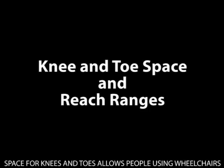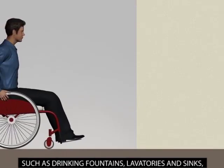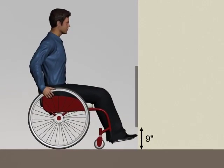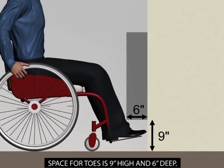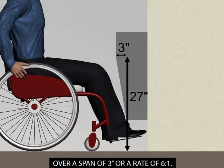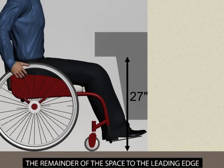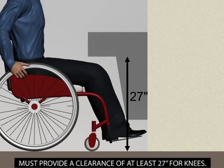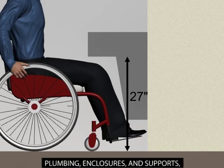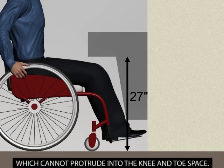Space for knees and toes allows people using wheelchairs to pull up sufficiently to elements such as drinking fountains, lavatories and sinks, and dining and work surfaces. Space for toes is 9 inches high and 6 inches deep. The clearance must increase to 27 inches over a span of 3 inches or a rate of 6 to 1. The remainder of the space to the leading edge must provide a clearance of at least 27 inches for knees. These clearances allow room for plumbing, enclosures, and supports which cannot protrude into the knee and toe space.